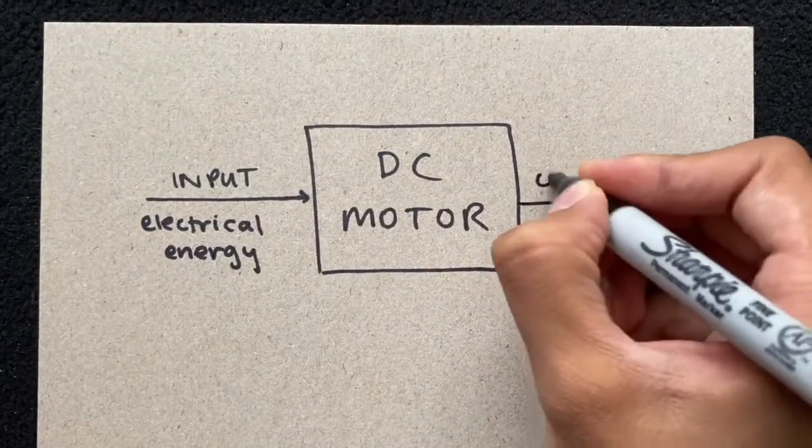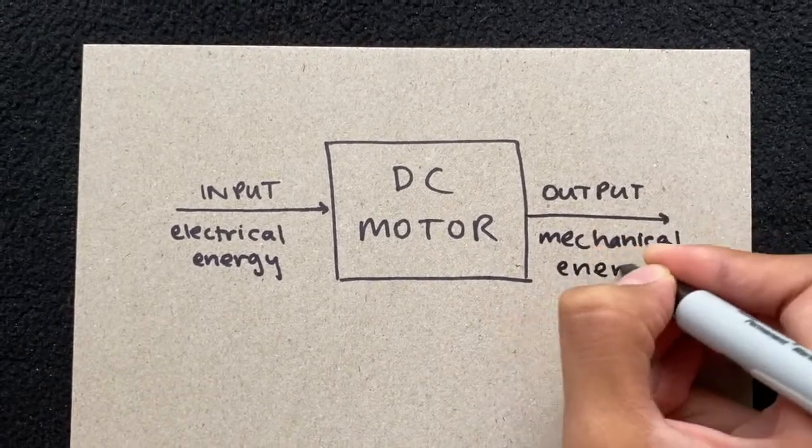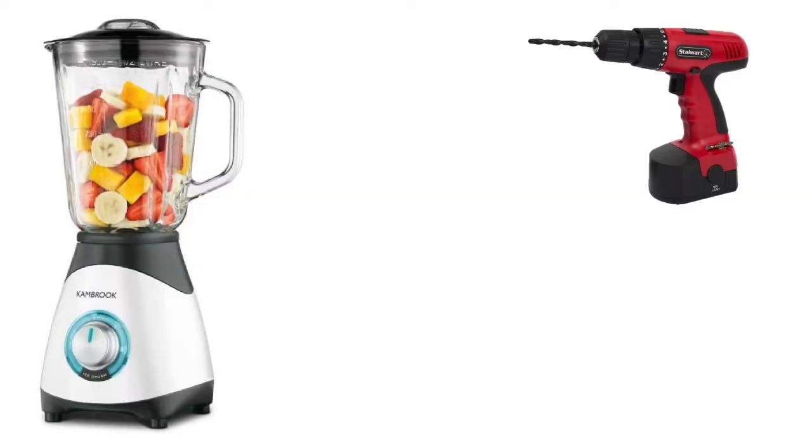A DC motor is a machine which applies the motor effect to convert electrical energy into mechanical energy, and is used in most household appliances.